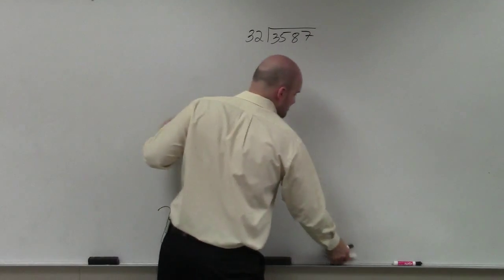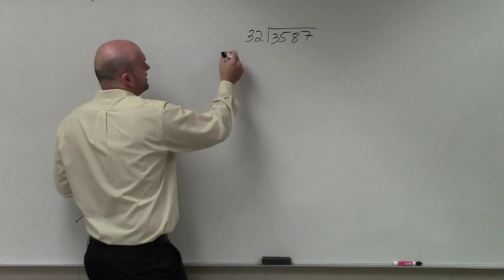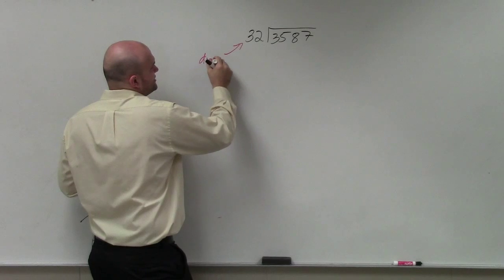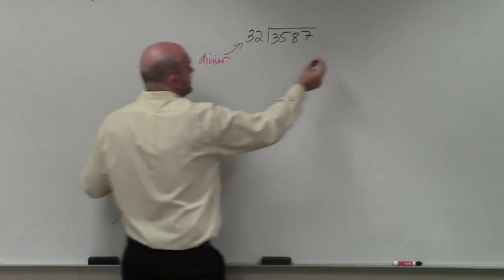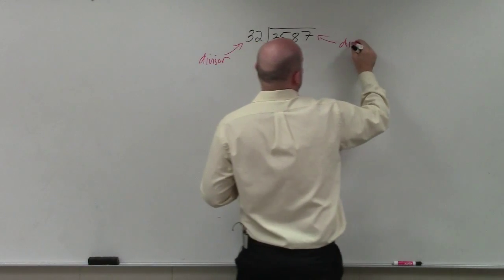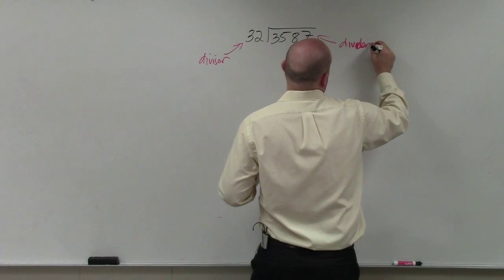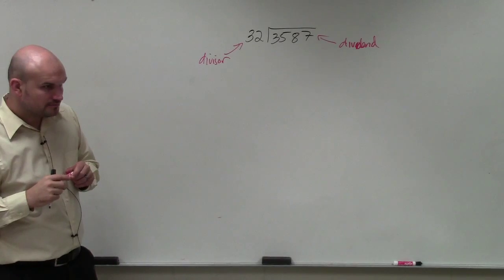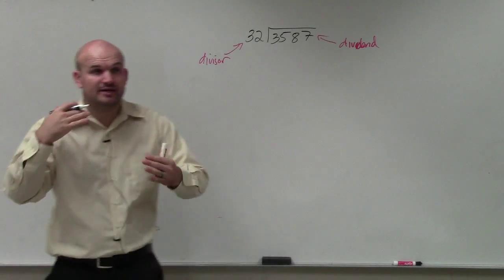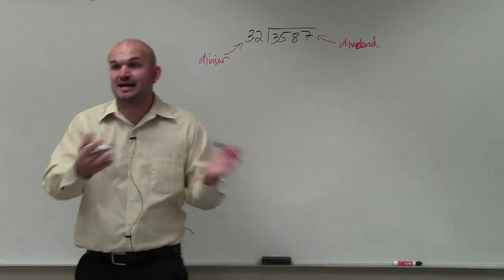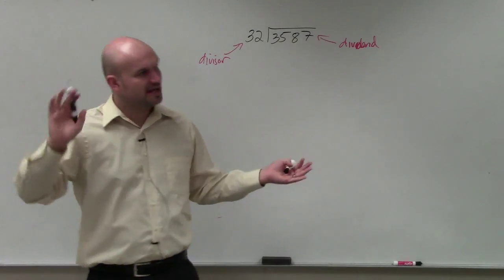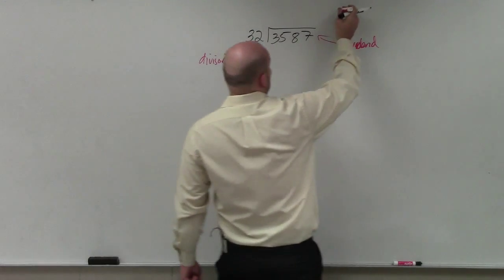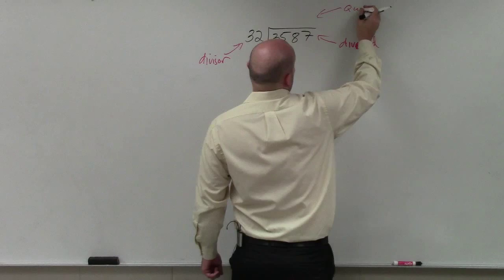Basically, there's a couple things. The main important thing I want you to understand is what you're dividing by is your divisor, and what you're dividing into is your dividend. I'm going to use that vocabulary often in this class. I'm going to say here's your divisor, here's your dividend, and so forth. And then the answer is what we call our quotient.